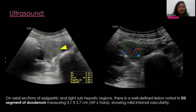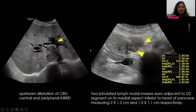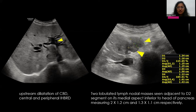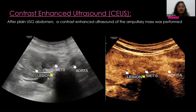Ultrasonography revealed a well-defined lesion in the D2 segment of the duodenum with mild internal vascularity. It caused upstream dilatation of the CBD and also central and peripheral IHBRD. Adjacent to this lesion, there were two lymph nodal masses adjacent to the D2 segment, inferior to the head of the pancreas. On contrast-enhanced ultrasonography, the lesion and the metastatic nodes are seen, with the aorta visible to the further left.